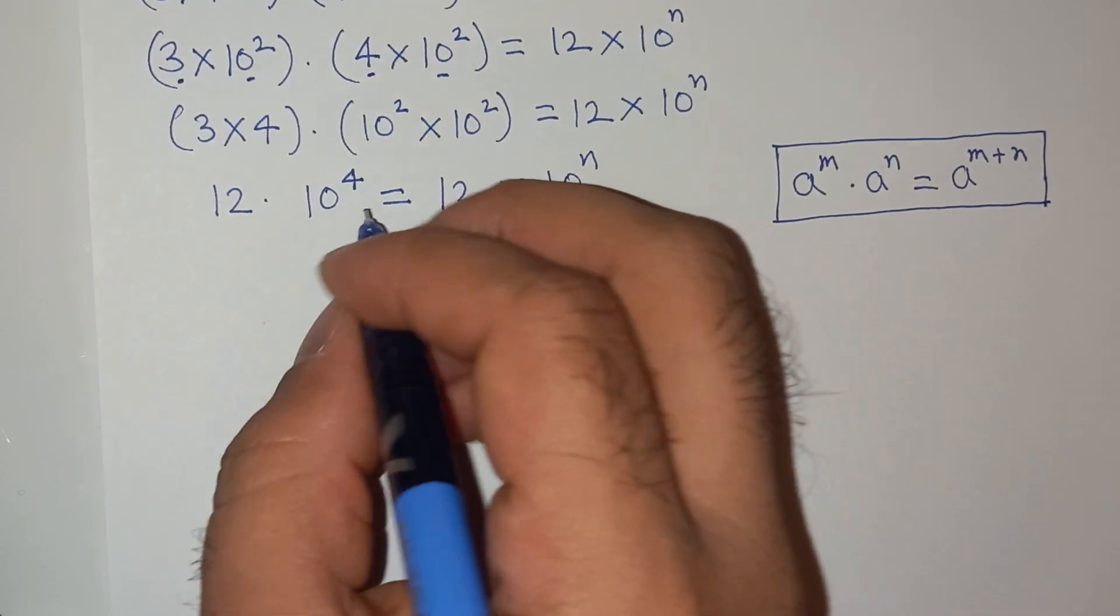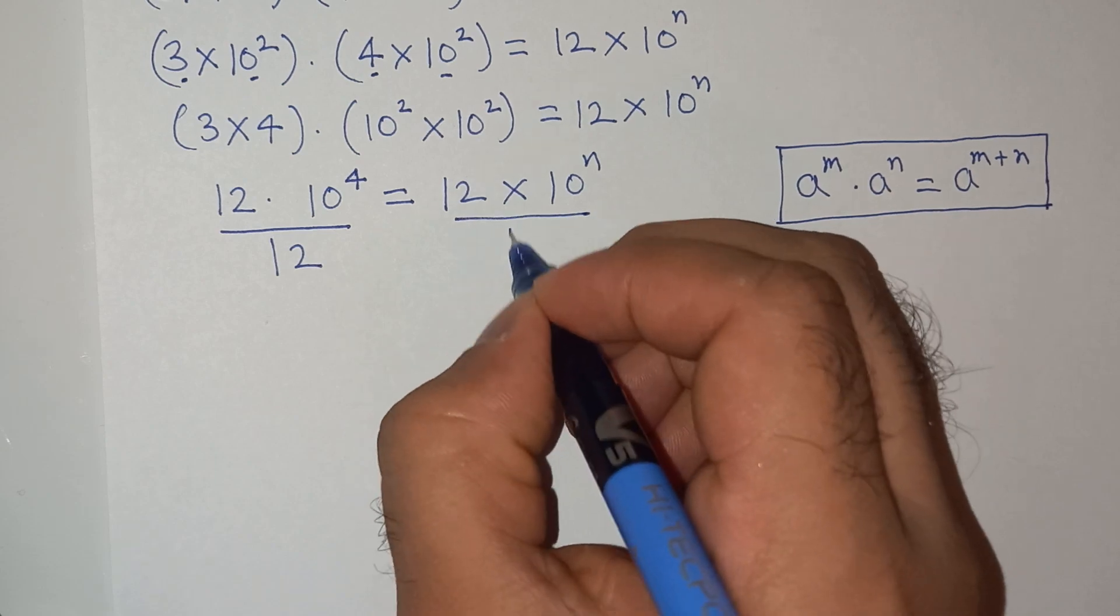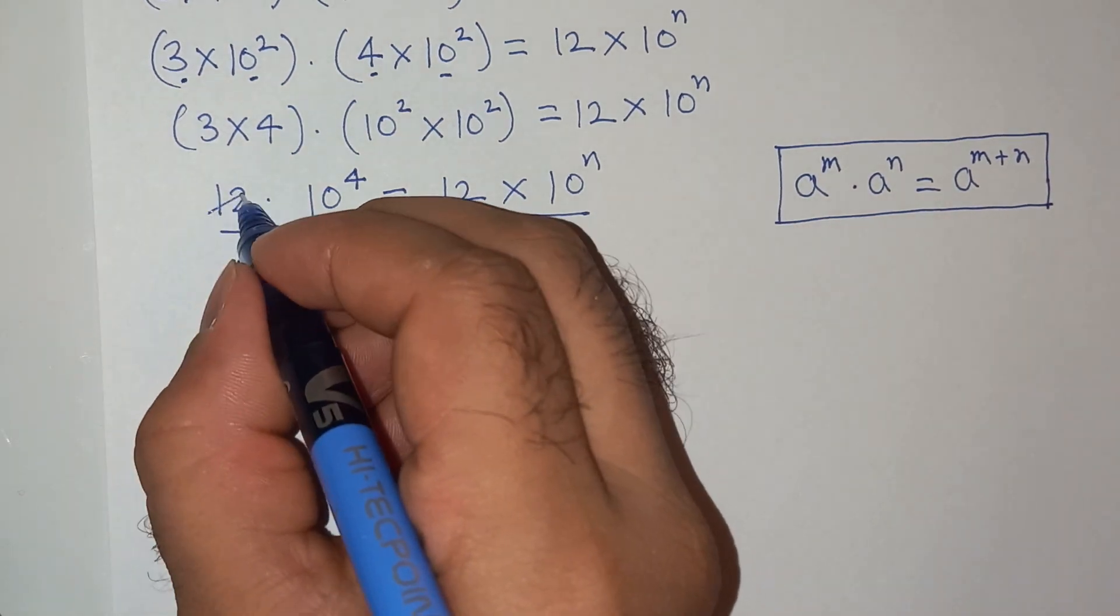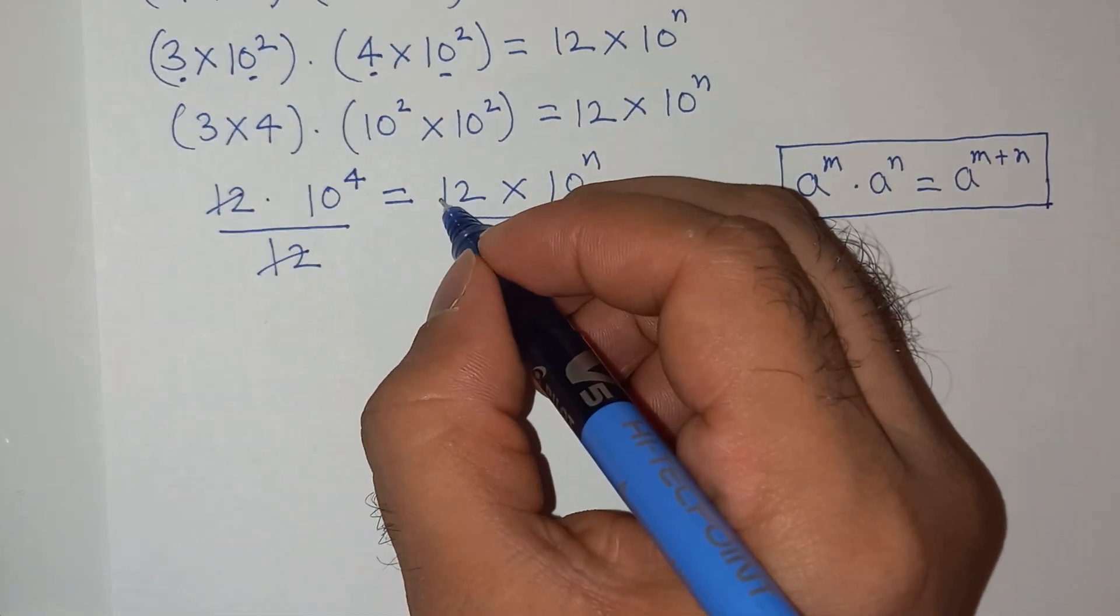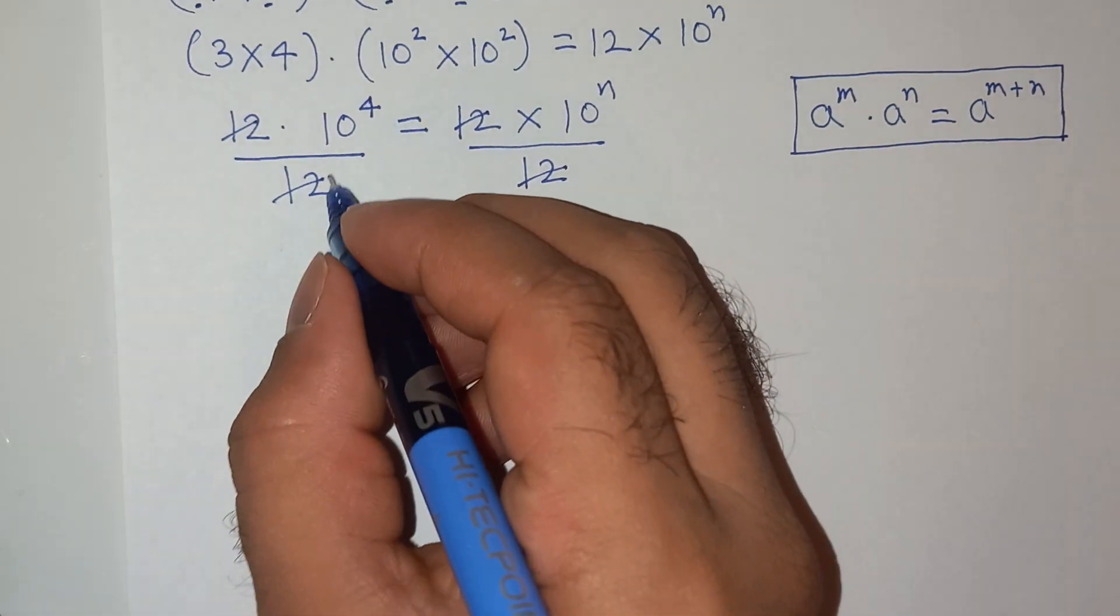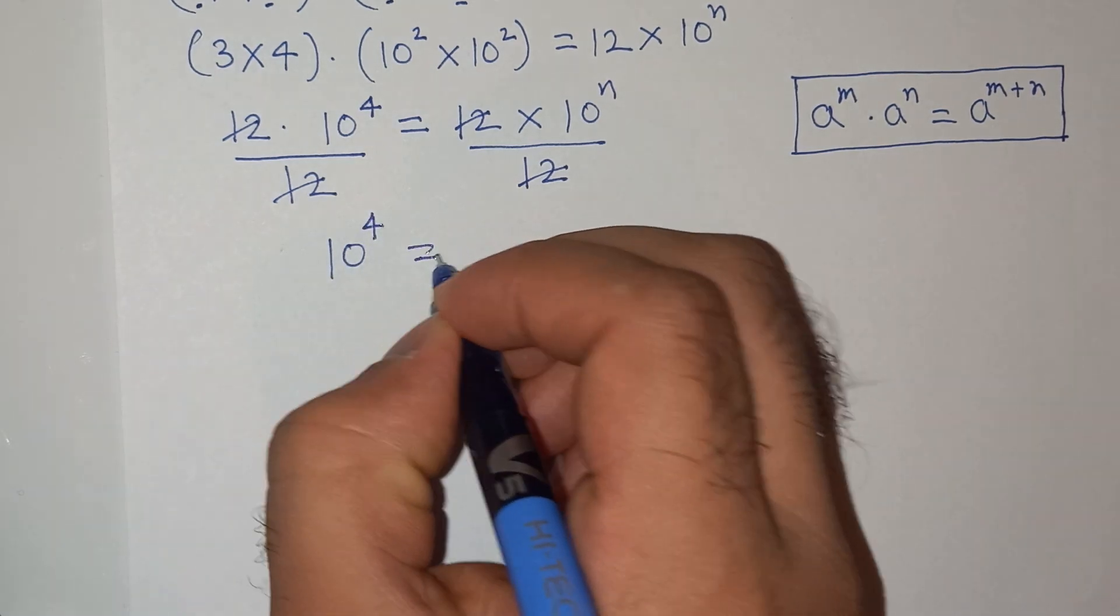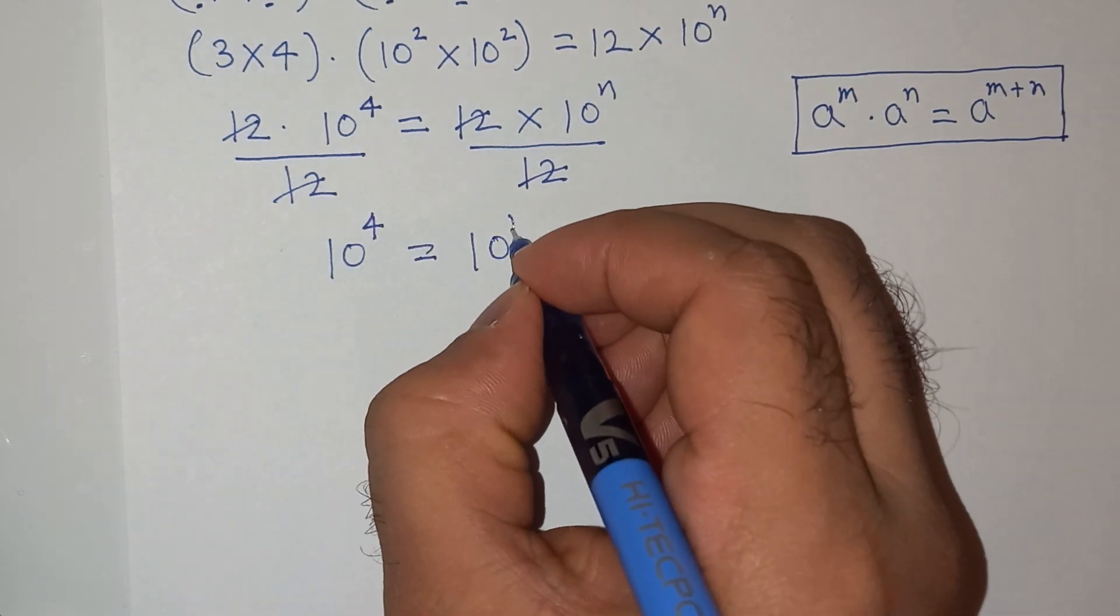Now let's divide left hand side and right hand side by 12. So this 12 and 12 will cancel. So finally what we have is 10 power 4 equals 10 power n.